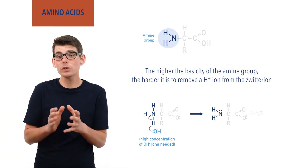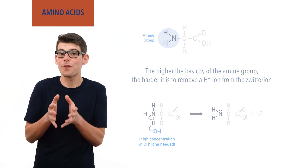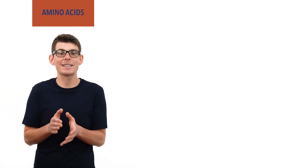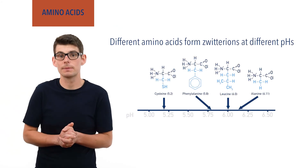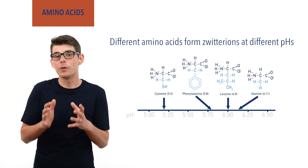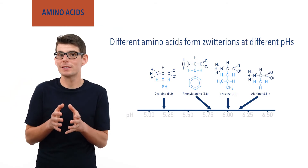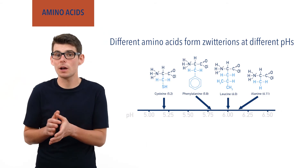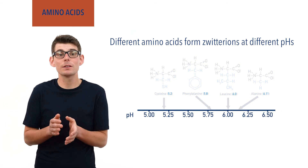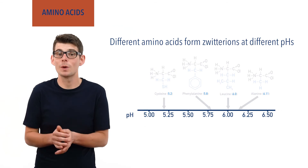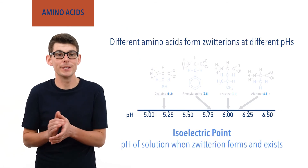This also means that zwitterions form at different pH values for different amino acids. The pH at which an amino acid forms a zwitterion and exists with no overall charge is sometimes referred to as its isoelectric point.